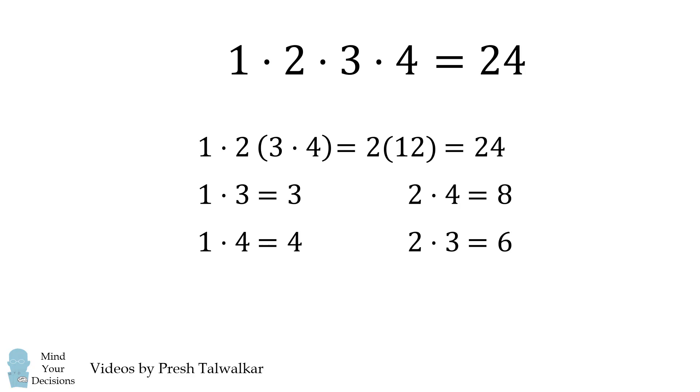This is also true in the second line. We have 3 times 8 which is equal to 24, and in the very last line we have 4 times 6 which is equal to 24. So we found three different ways to get the product of the four original numbers.